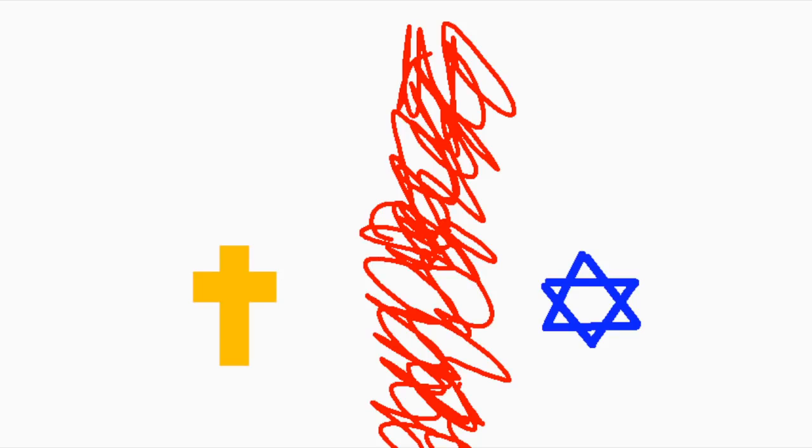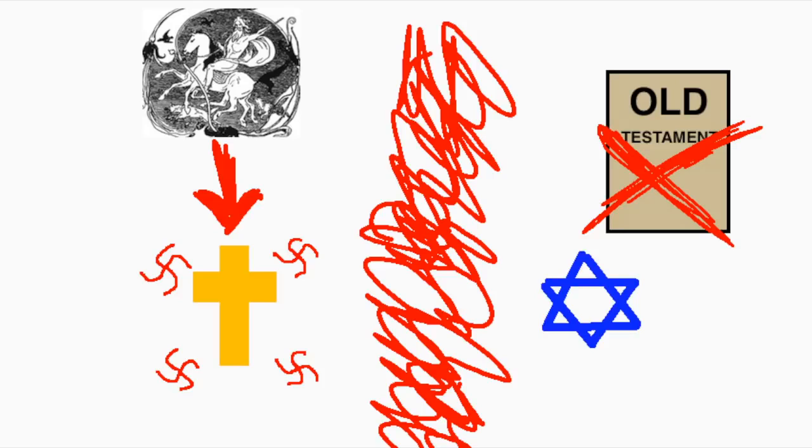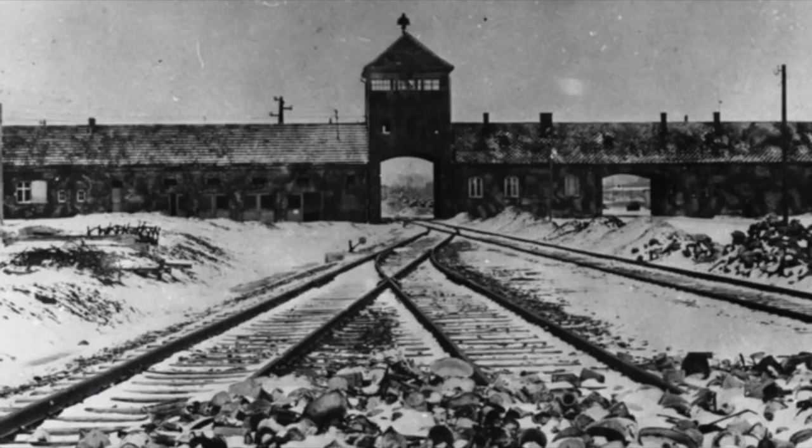Maybe Christianity actually has nothing to do with Judaism and is actually a direct descendant of Germanic paganism and is a pure Aryan religion. Maybe we should get rid of the Old Testament because it was written by Jews, and maybe the entire Catholic Church is just a Jewish conspiracy, and so is communism, and so is capitalism, and so is everything! And you can probably see where this is going.